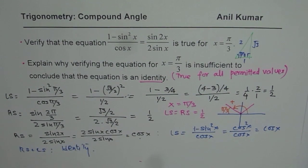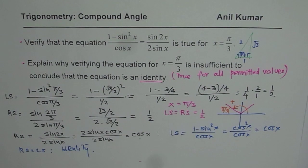So that is how you could prove an equation to be an identity. An equation is an identity only if it is true for all permitted values of the independent variable. Thank you and all the best.